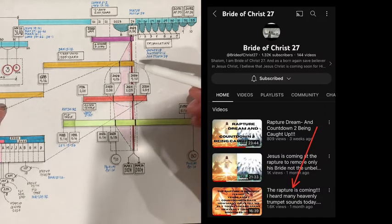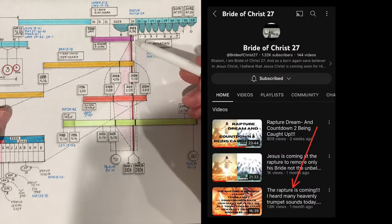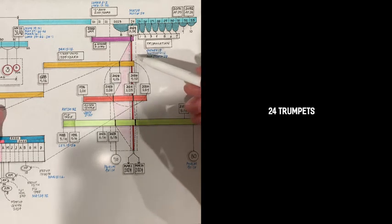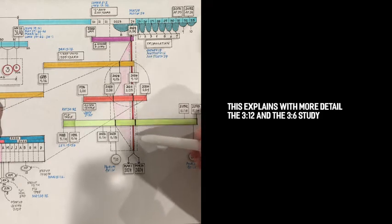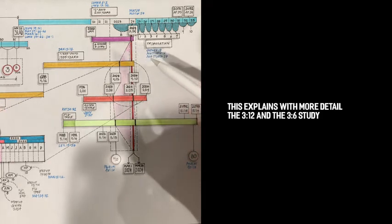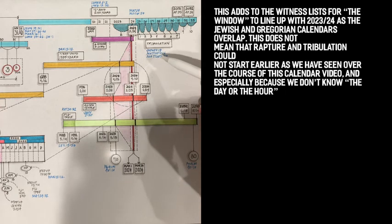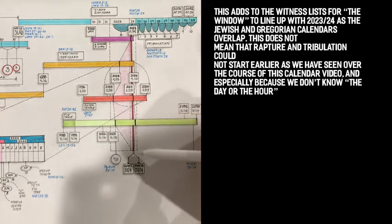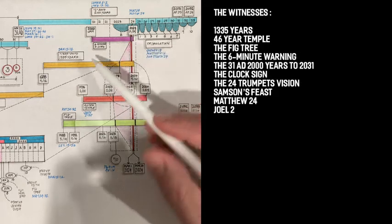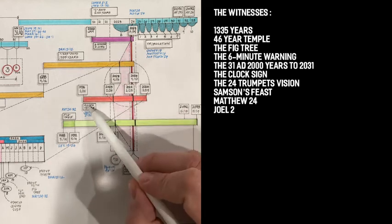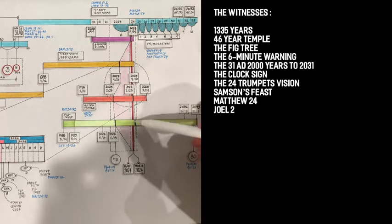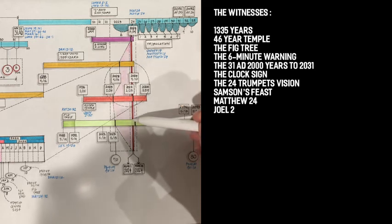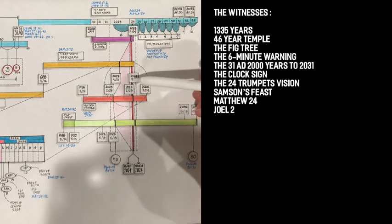The third confirmation I had is from my sister at Bride of Christ 27. When she mentioned that she heard 24 trumpets, that's the third and most important confirmation because at the time last December, as we were focusing on the 312s, there was a possibility of looking at 12/24, so 24 as a day, but it appears that it would be definitely pointing to the possibility of 24 as the year. If that's the case, then we have three confirmations and all of these other witnesses, the 1335 years, the 46-year temple, the fig tree, all landing inside this window. And this window is going to get more and more defined as we go through the year.